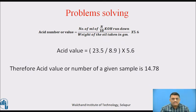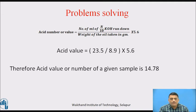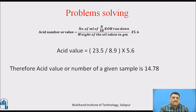Substituting the values in the formula: acid value = 23.5 ÷ 8.9 × 5.6. Therefore, the acid value of the given sample is 14.78.